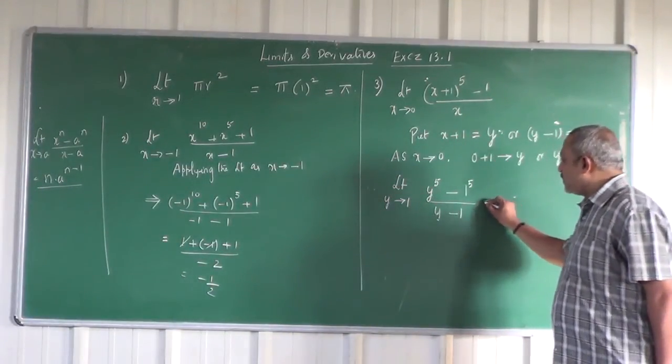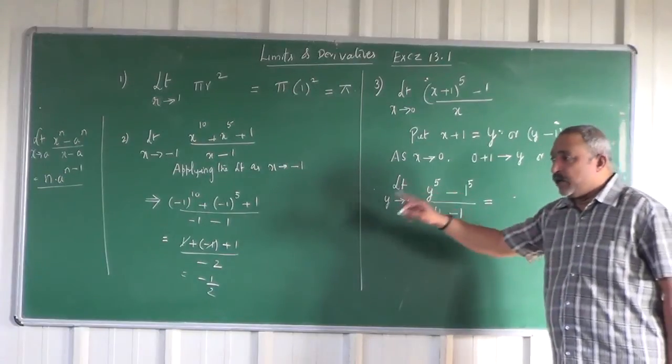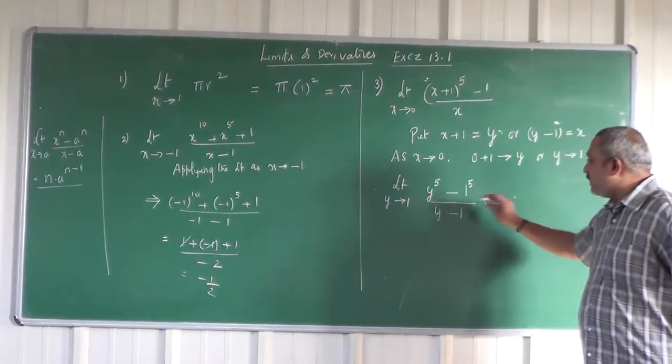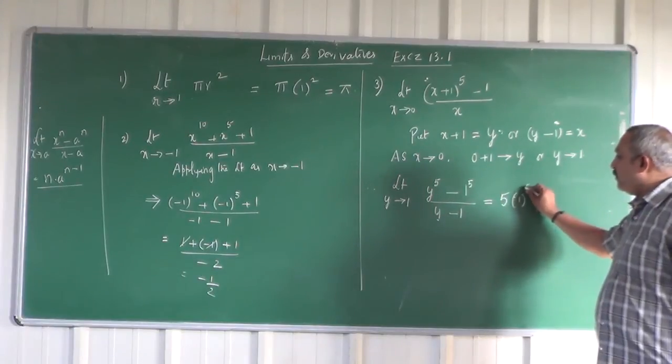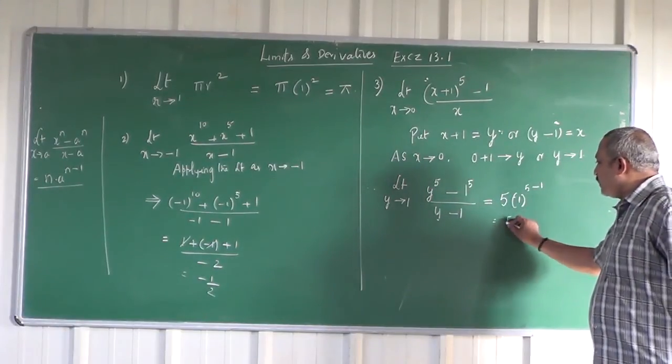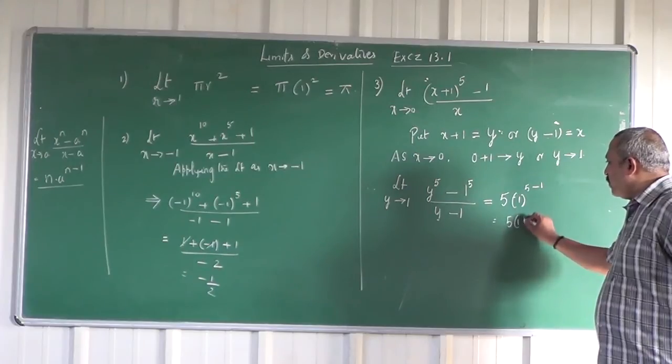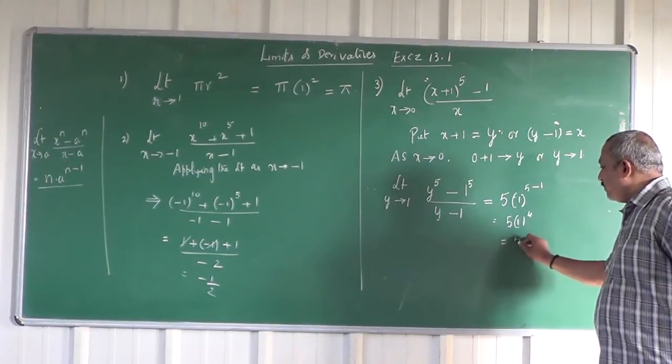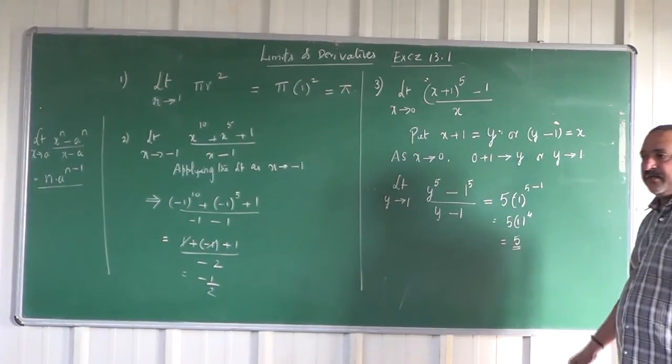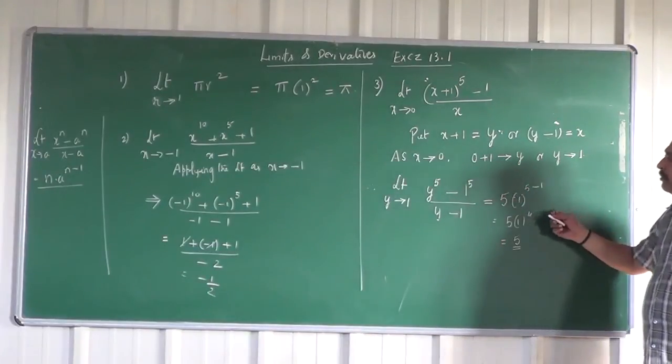So the answer of this problem is n·a^(n-1). What is n? 5. So 5 times 1^(5-1), that is 5 times 1^4, which equals 5. The limit is 5. Note this problem - we solved it by substituting x + 1 = y.